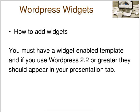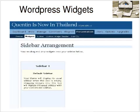How you add widgets is very simple. You must have a widgets-enabled template, and if you use WordPress 2.2 or greater, they should appear in your presentation tab if your template supports them. And this is what it looks like — simply click on presentation and you should see a widgets tab, which you just click on and it will show you this page.